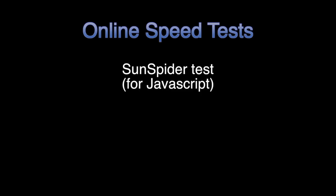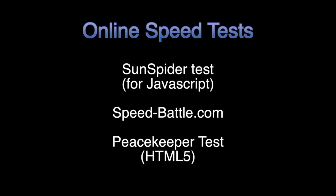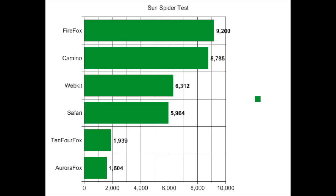The first thing I did was run a series of speed tests on each browser to see how they performed. I used the SunSpider test for testing JavaScript performance. I also used speedbattle.com and the Peacekeeper test for testing HTML5 performance. Here are the results for the SunSpider test — the smaller number is the better performer. AuroraFox pretty much takes the crown here, with the obsolete Firefox coming in last place.